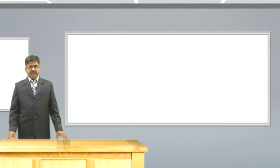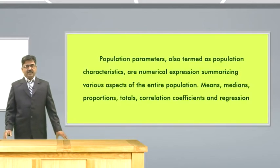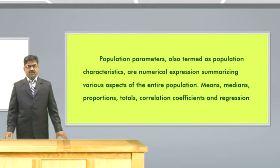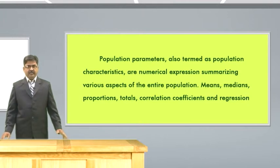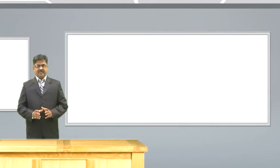Let me tell you what is population parameters. Population parameter is also termed as population characteristics and are numerical expressions summarizing various aspects of the entire population like mean, median, proportions, total, correlation coefficient, regression coefficients — any population characteristics may be called as the population parameter, while the same characteristics of the sample would be known as sample statistics.